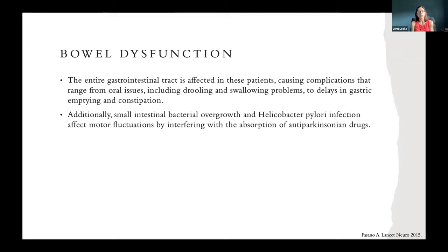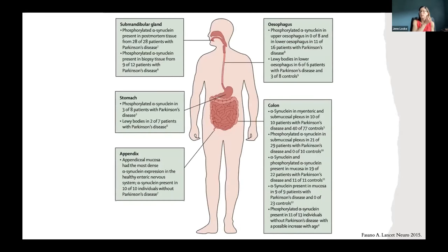Regarding bowel dysfunction, the entire gastrointestinal tract is affected in these patients, causing complications ranging from oral issues including drooling and swallowing problems, to delays in gastric emptying and constipation. Additionally, small intestinal bacterial overgrowth and H. pylori infections affect motor fluctuations by interfering with absorption of anti-Parkinsonian drugs. For further reading on how Parkinson's disease affects the gastrointestinal tract — including the submandibular gland, stomach, appendix, colon, and esophagus — I recommend a Lancet Neurology article by Fasano et al. On that note, I'd like to open the floor to questions.